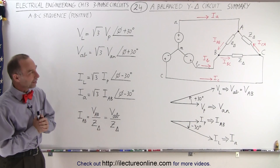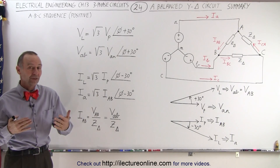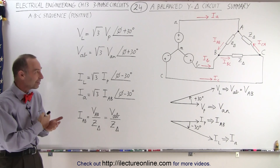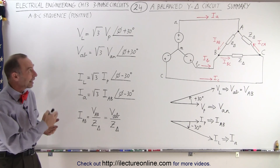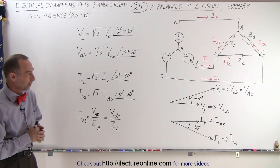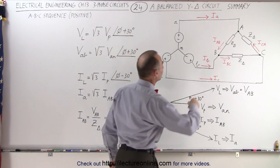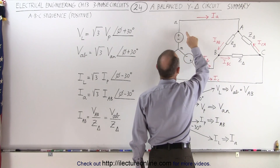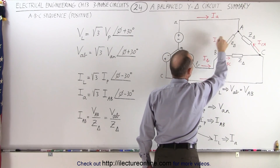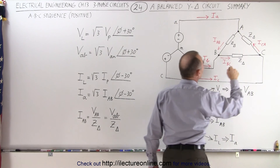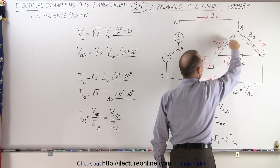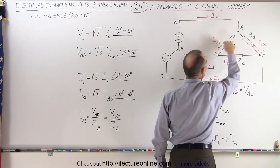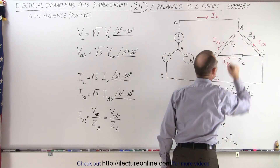Welcome to Electron Line. We're now ready to summarize the relationship between the phase and the line currents and the phase and the line voltages for a Y-delta circuit. The line currents are Ia, Ib, and Ic on the lines from the source to the load. The phase currents are the currents through the three load impedances from A to B, from B to C, and from C back to A.